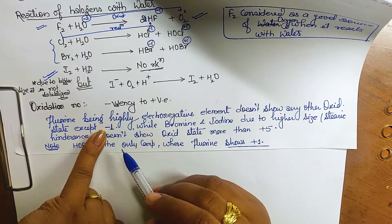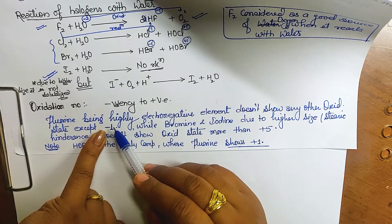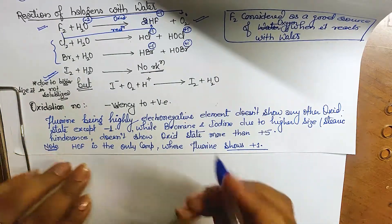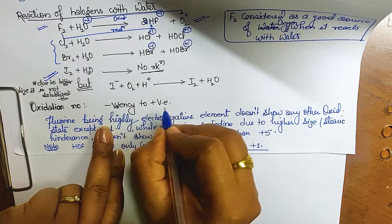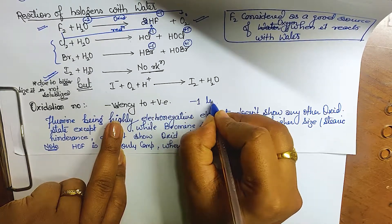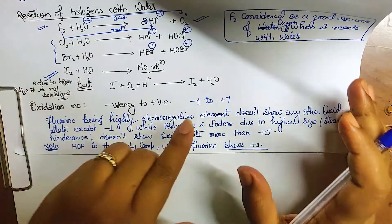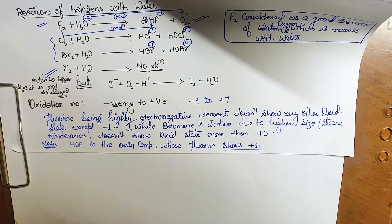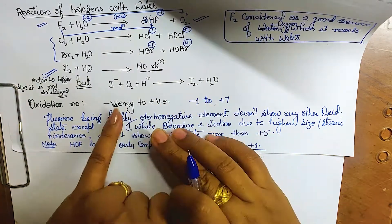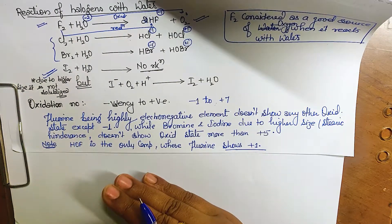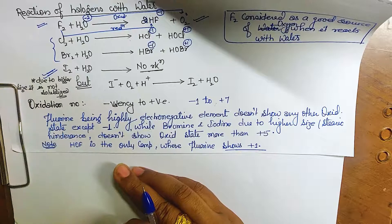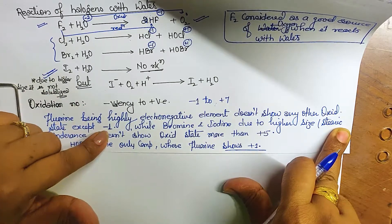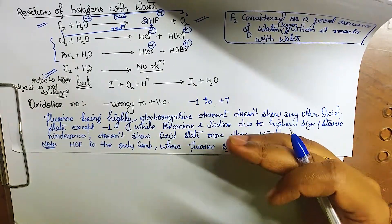The range of oxidation states for group 17 elements is from −1 to +7. So halogens can show −1, 0, +1, +2, +3, +4, +5, +6, and +7 states. However, fluorine, being the most electronegative, only shows −1. The electrochemistry reduction potential also supports this.